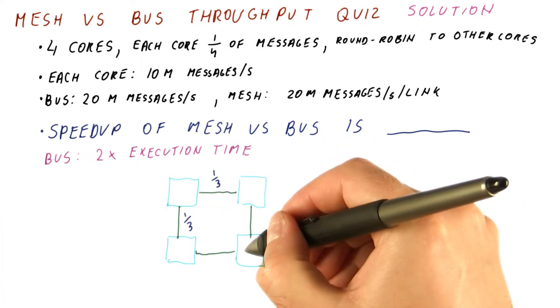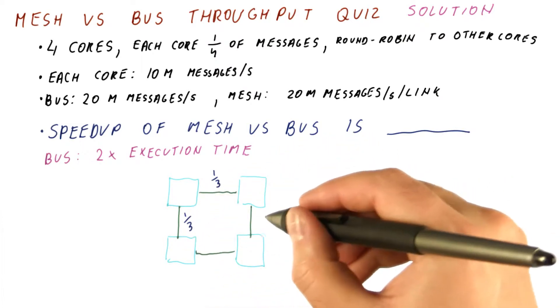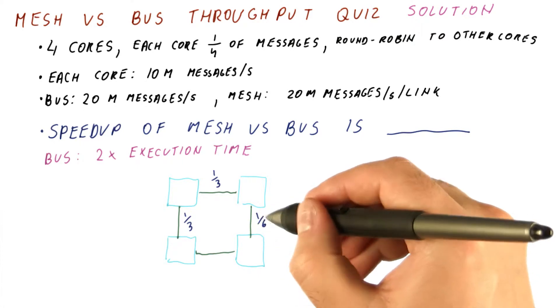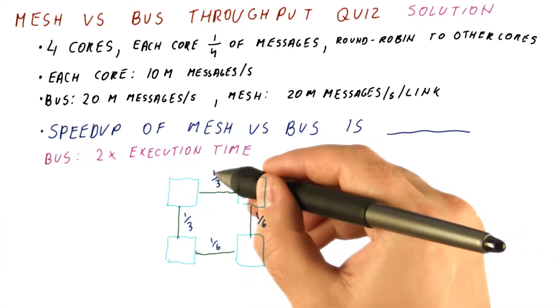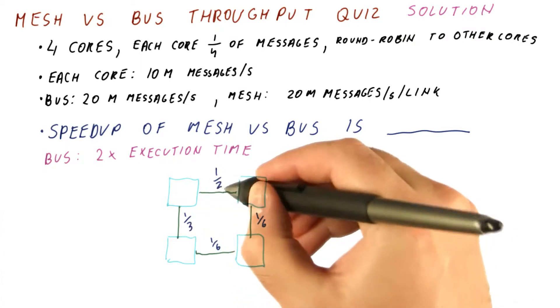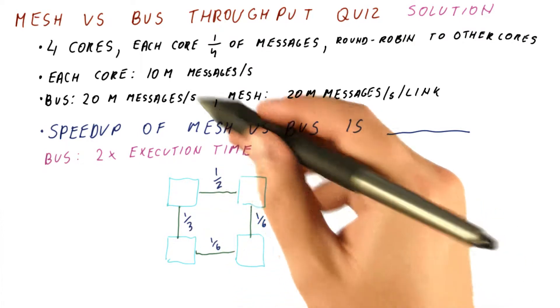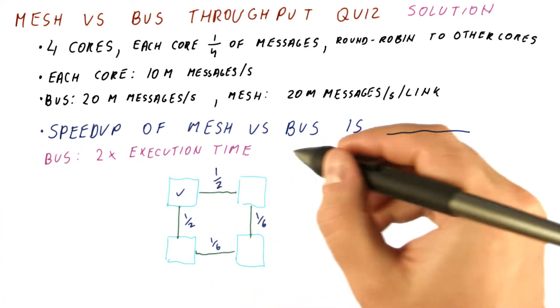Let's say that one sixth go this way, one sixth go this way. So this link will be used for one sixth of the messages sent by this core, and this one for another one sixth. And then we add one sixth to each of these, which brings us to one half of 10 million messages. So now we are done with this core.